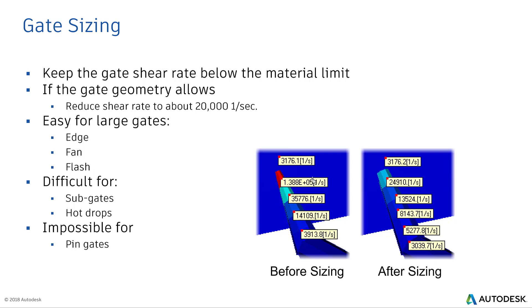If the gate geometry allows, try to reduce the shear rate, or I mean say try to keep it below the 20,000 per second mark.